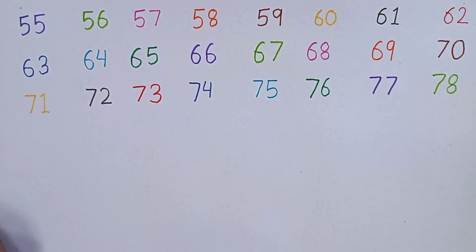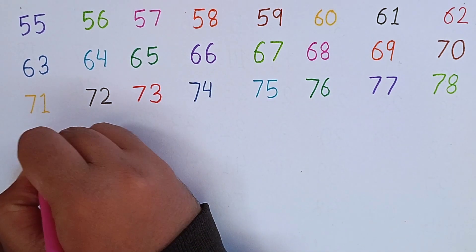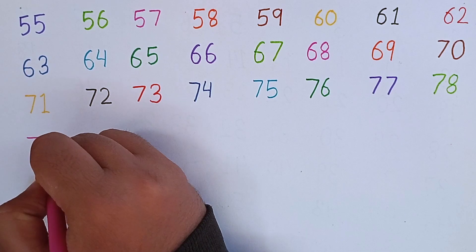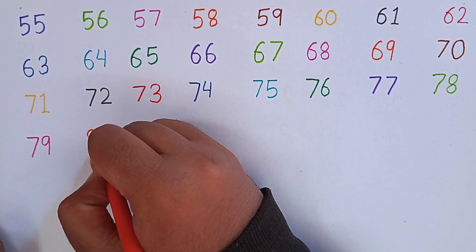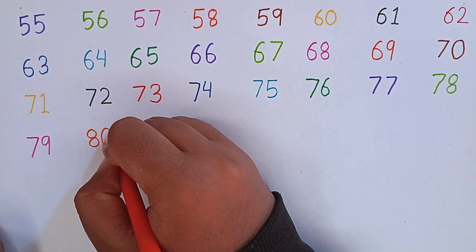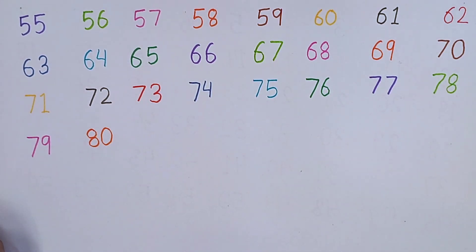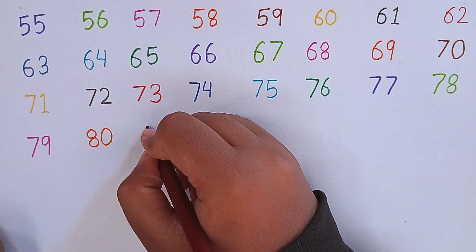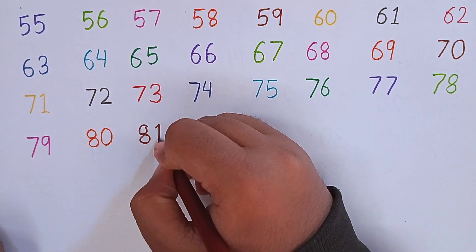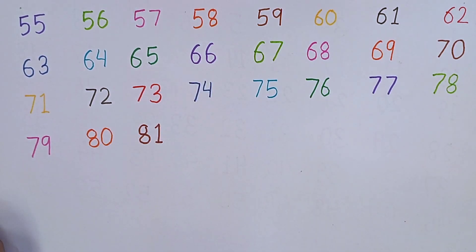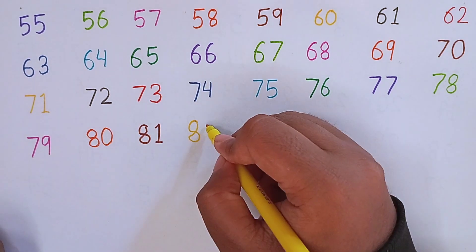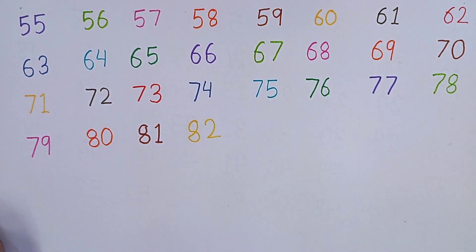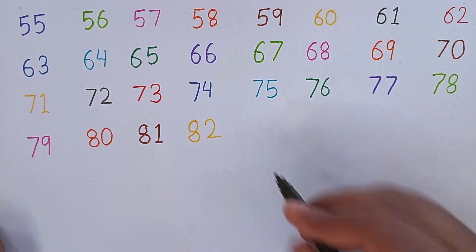Again, repeat with me: 71, 72, 73, 74, 75, 76, 77, 78. After 78, I am writing 79. 7, 9 — 79. Now I will write 80. 8, 0 — 80. After 80, the next number will be 81. 8, 1 — 81. After 81, the next number will be 82. 8, 2 — 82. Again, repeat with me: 79, 80, 81, 82.